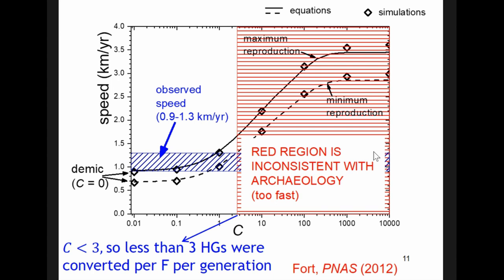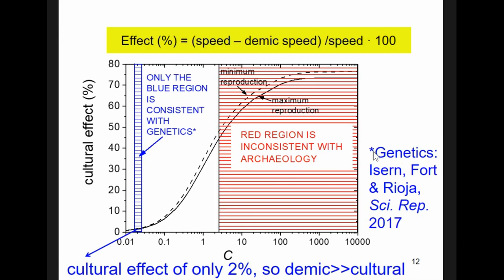And finally, this is the last slide. Here we have the effect, which is the cultural contribution to the speed. It's the total speed minus the speed without the cultural transmission divided by the total speed times 100. And here, we have the same values as before. We have seen that archaeology says that this region is not possible, because it would be too fast. But, comparing to a Neolithic lineage of mitochondrial DNA haplogroup K, we have that this model predicts the shape of the cline. It predicts that the farther away from the Near East, the lower the Neolithic genetic frequency.